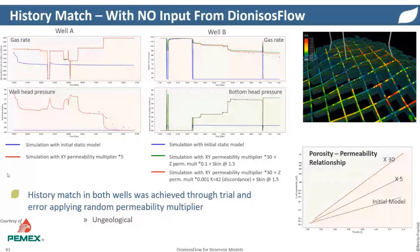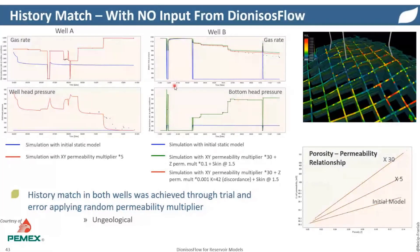Starting with a classic static model, the first dynamic run gives the blue curves for well A and well B. We can see that right from the beginning there is no match between the gas rates and the well-head pressure or the bottom-hole pressure. Classic calibration work was then done with two well models extracted from the static model around well A and well B, calibrated using a permeability multiplier. The resulting multipliers are quite different between the two wells, with no clear consolidation between the two sets of parameters.